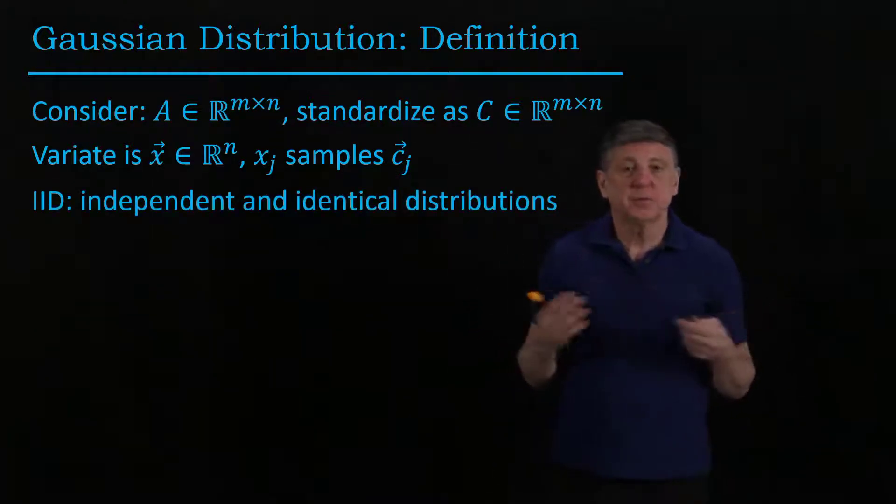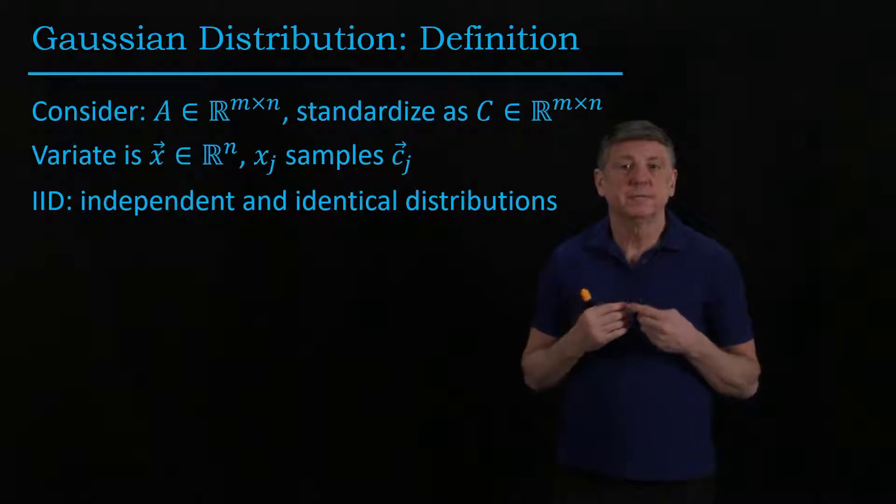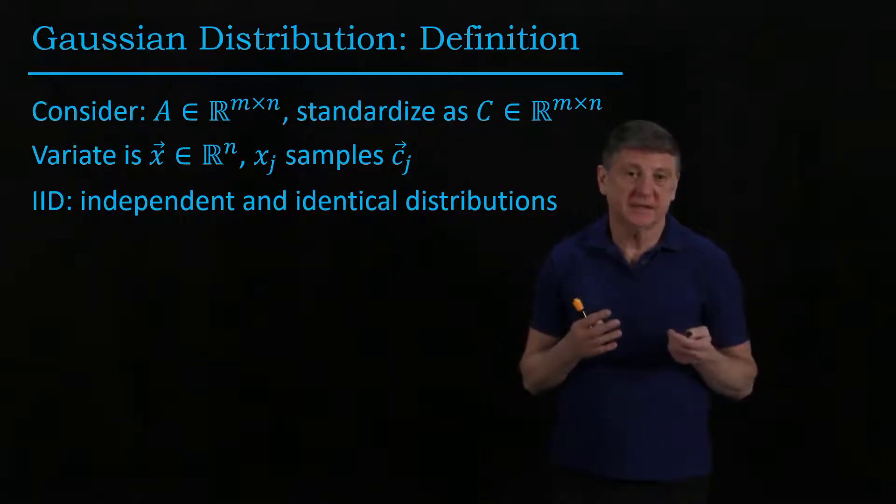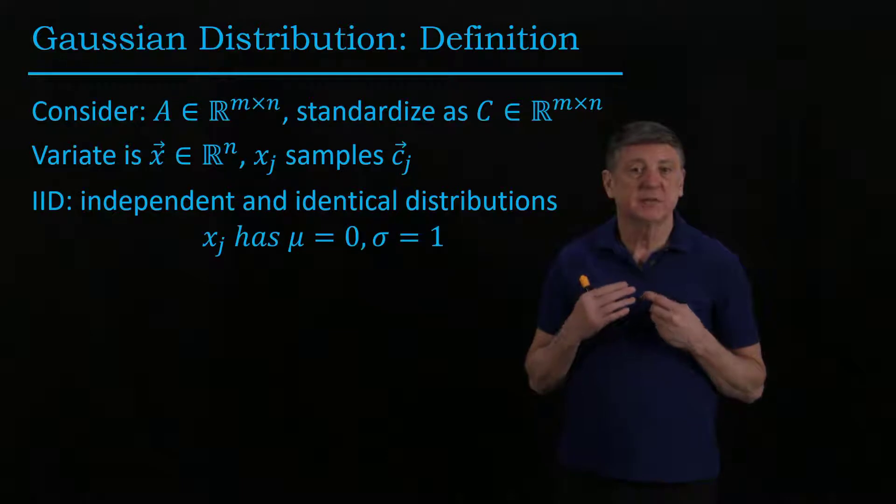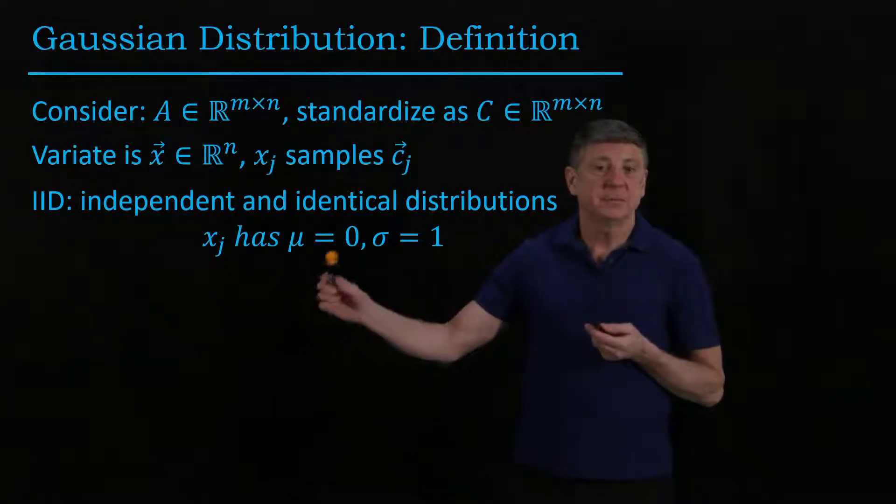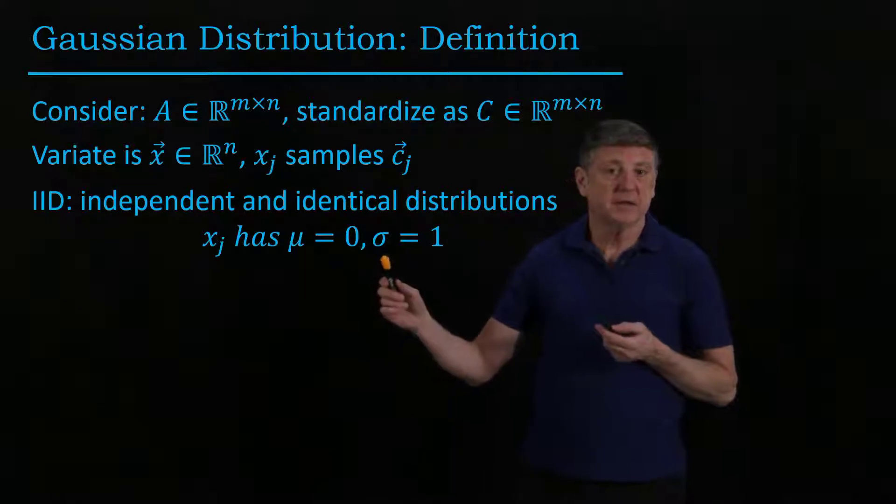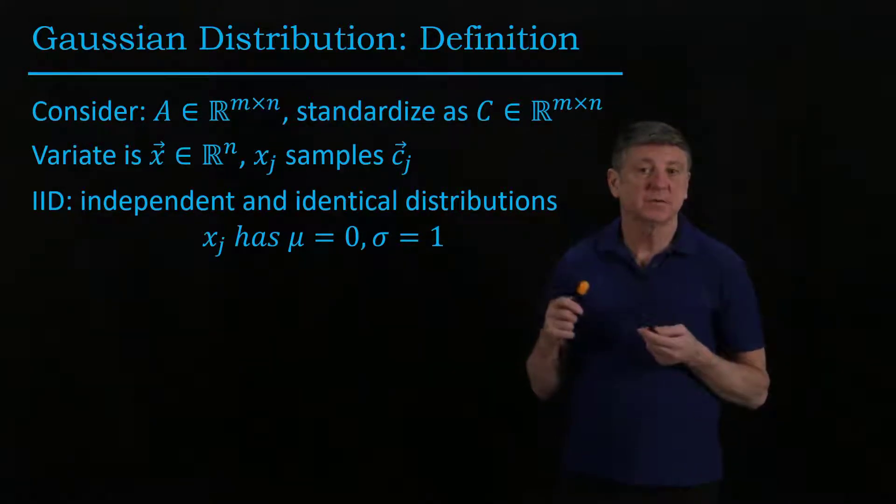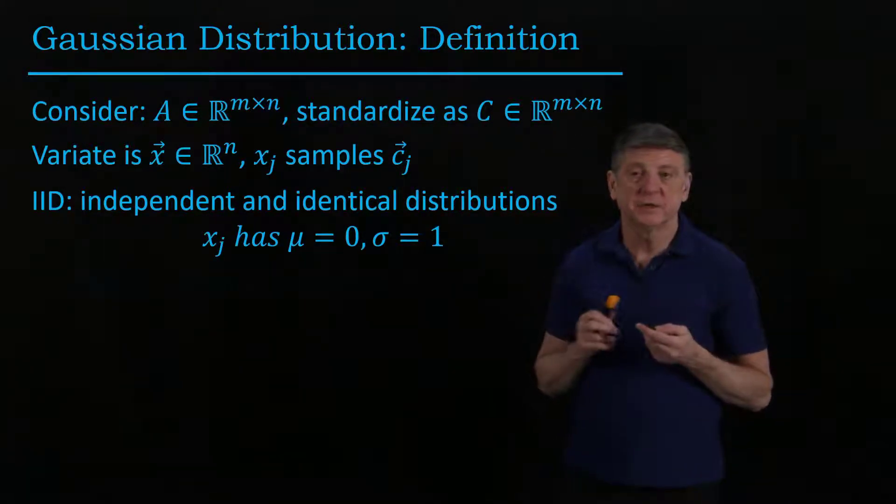In statistics, what we usually do is assume that the variates are independent and identically distributed, and in this case we're supposing they have a Gaussian or normal distribution, and that their mean is zero and their standard deviation is one, and that comes out of our standardization of our original data.